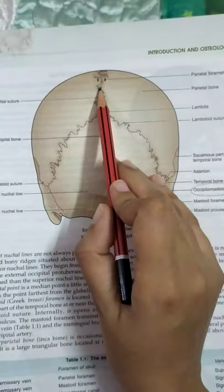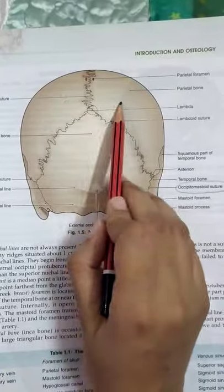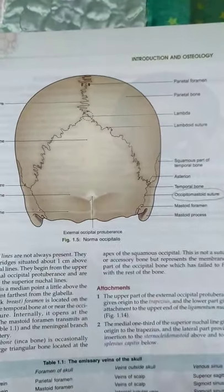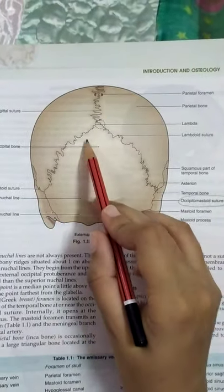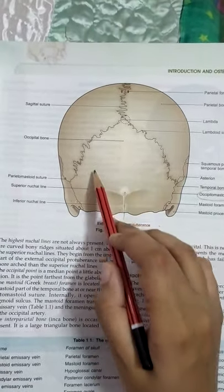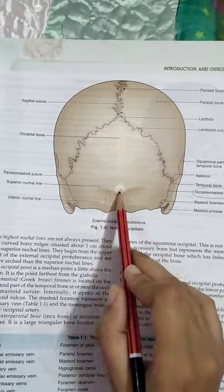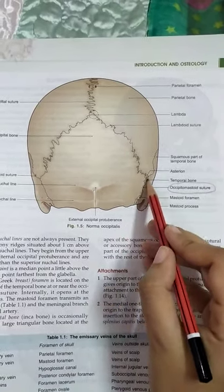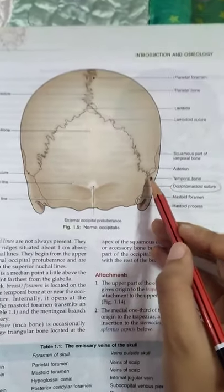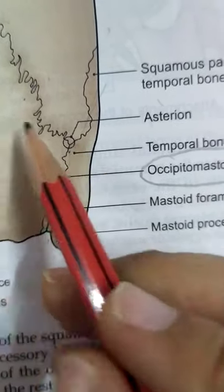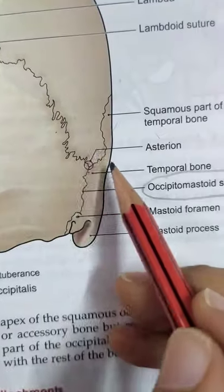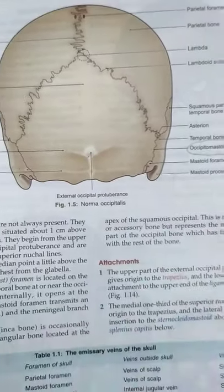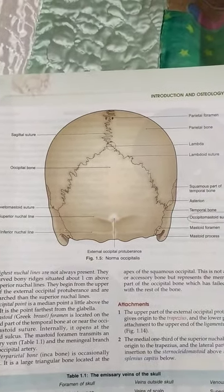To summarize from the book: the features visible from the norma occipitalis include some part of the sagittal suture, the two parietal bones, the parietal emissary foramen with obelion between them, lambda or the posterior fontanelle, the lambdoid suture, the occipital bone, the external occipital protuberance, the superior and inferior nuchal lines, the mastoid foramen, the occipitomastoid suture, the parietomastoid suture, the asterion, and the mastoid process — which is part of the temporal bone.